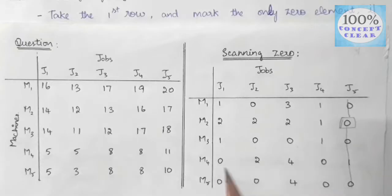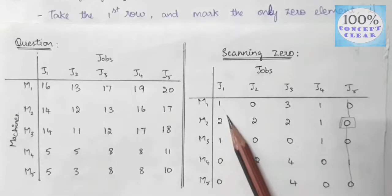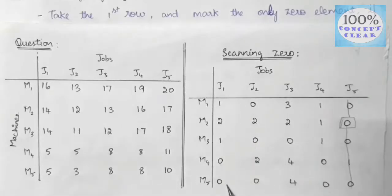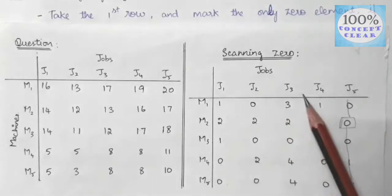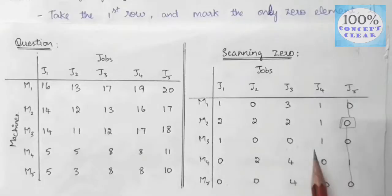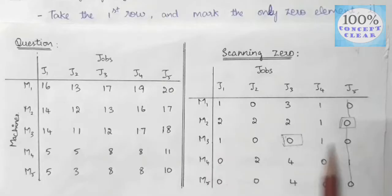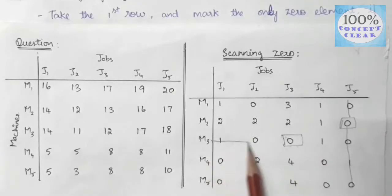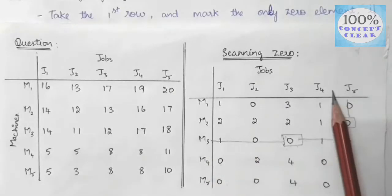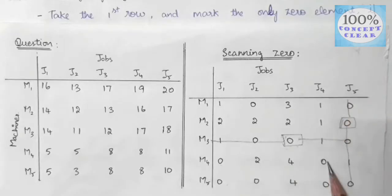Now rows are complete, so we move to columns. In the first column, we have 2 zeros — skip it. In the second column, we have 3 zeros — skip it. In the third column, we have only 1 zero, so we mark it and cancel that row. In the fourth column, we have 2 zeros — skip it.